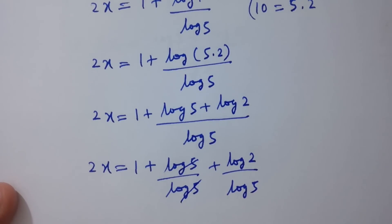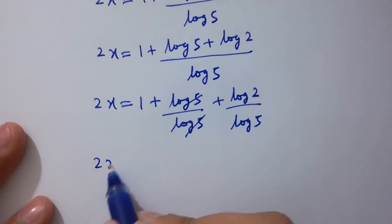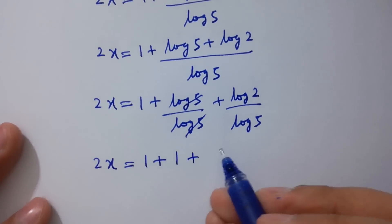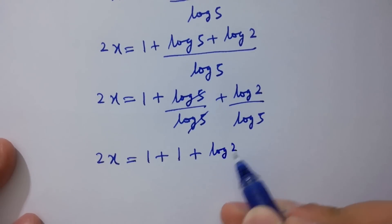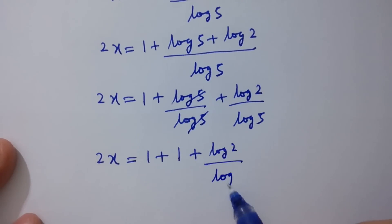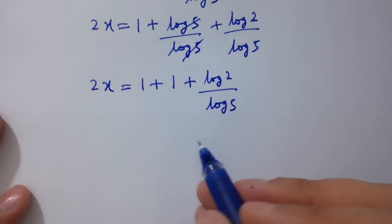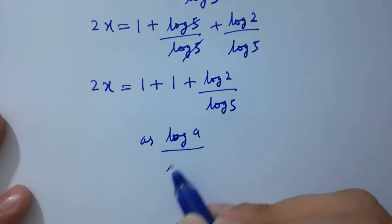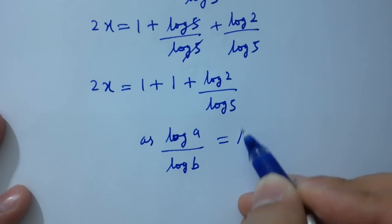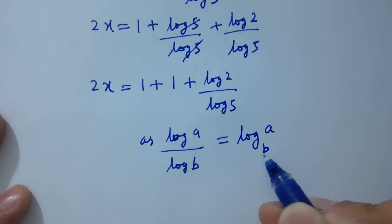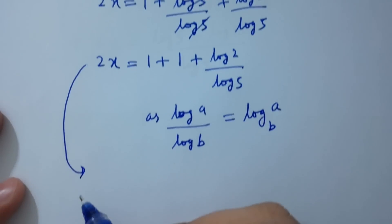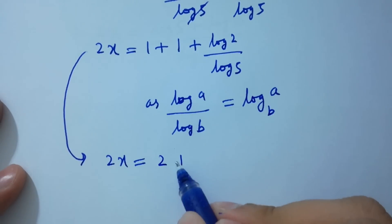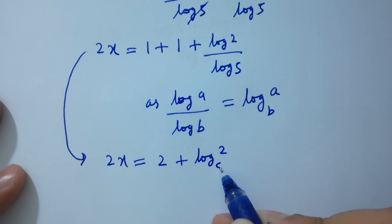Log 5 and log 5 cancel, so 2x equals 1 plus 1 plus log 2 over log 5. Using the change of base rule log a over log b equals log a to the base b, 2x equals 2 plus log 2 to the base 5.